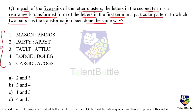If you observe here, there are five pairs. In these five pairs, the letters in the second term are rearranged from the letters of the first term. Now, we need to identify what is the pattern of rearrangement and check which among these five is having the same pattern — whether two and three, or three and four, or one and three, or four and five. One of the best ways to solve this question, instead of getting confused, is to simply give numbers to the alphabets.